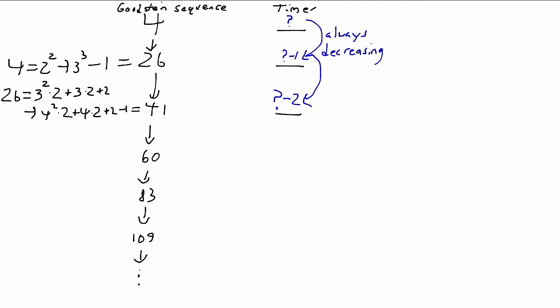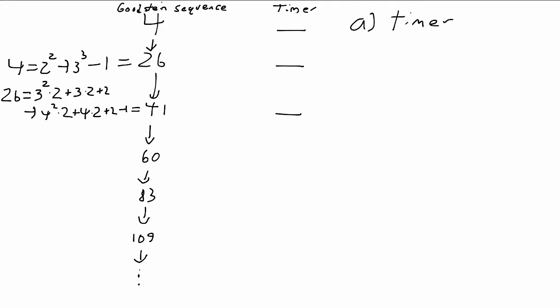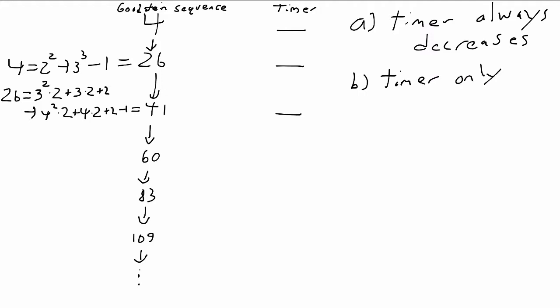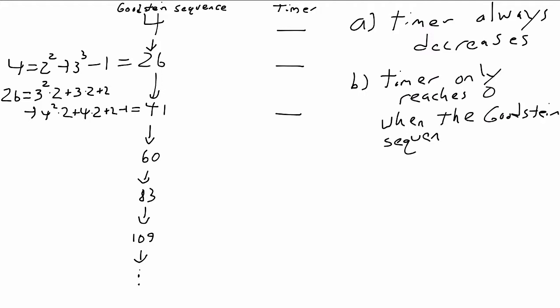Of course, this means all the work is going to be figuring out what the value of the timer should be, so that we can be sure that: (a) the timer decreases at every step, so that it does eventually reach 0, and (b) the timer only reaches 0 when the Goodstein sequence also reaches 0.